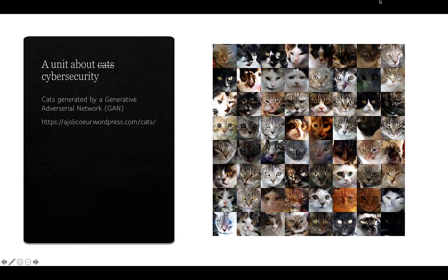In this video we're going to continue our discussion about risk. We've considered threats and now we're going to be looking at vulnerabilities. Before we do that, I wanted to talk about this picture, which is a set of images of cats generated completely artificially using an AI technique called generative adversarial networks, or GANs. These cats are completely synthetic — they don't exist — but are incredibly realistic.